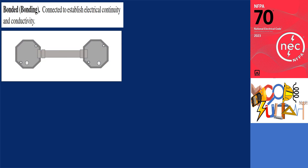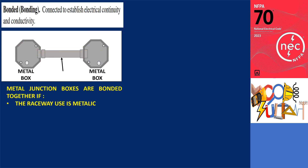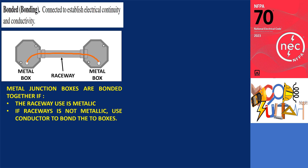Let's begin with the definition of bonded according to the Codesultant. Bonding refers to the connection made to establish electrical continuity and conductivity. In our first illustration, if the raceway used is made of metal, the two metal boxes are automatically bonded. However, if non-metallic raceways are used, a conductor or jumper is required to bond these two metal boxes together. This ensures electrical continuity between them.